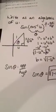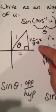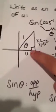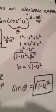So you draw a right triangle and you get theta. You can't find the opposite yet, but you know that the adjacent is u and the hypotenuse is 1. So you want to solve for the opposite side.